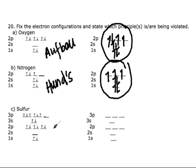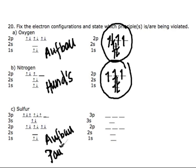For the electron configuration of sulfur, the 1s orbital is completely filled, but the 2s is not filled at all while the 2p orbitals are being filled — this violates the Aufbau principle, since lowest energy orbitals must be filled first. Also, some orbitals have 3 electrons, which violates the Pauli exclusion principle, since there can only be a maximum of 2 electrons per orbital. Additionally, the 3p orbitals are being completely filled while another 3p orbital has no electrons, which also violates Hund's rule, because electrons must be distributed evenly between same-energy orbitals before pairing.